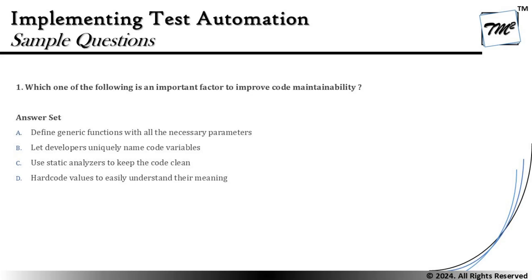Option C says: use static analysis tools or analyzers to keep the code clean. The phrase 'code clean' is a good reflection — static analysis tools will help you identify where you have not followed clean code practices, which are very important to keep code maintainable. They highlight and detect things like hardcoded information that may not be maintainable over time.